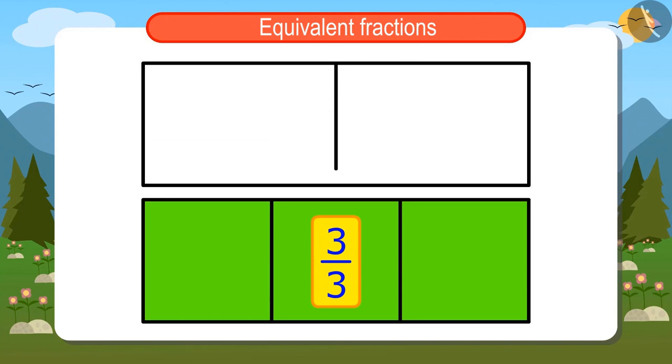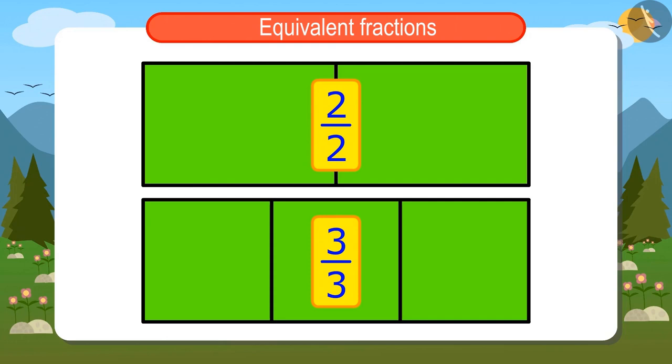Now to show the 2 upon 2, I will make two equal parts of this rectangle. And these two parts will show the 2 upon 2. Now if we look at these two, we will come to know that 2 upon 2 and 3 upon 3 are equivalent because both are showing same quantities.